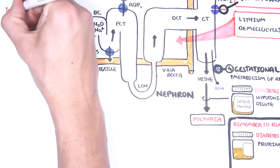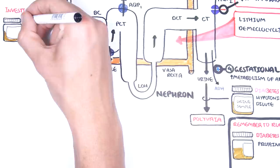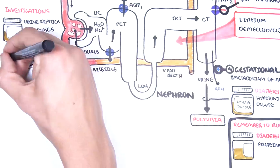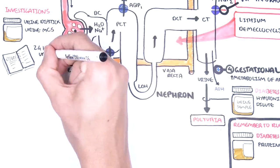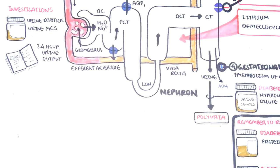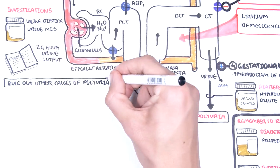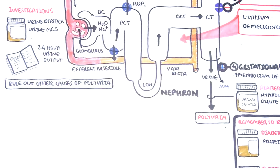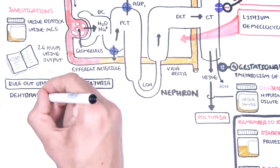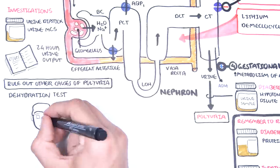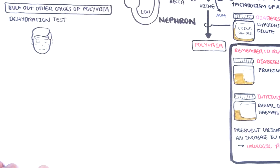Investigations to perform: because patients present with polyuria, it's good to perform a urine dipstick, urine microscopy culture and sensitivity, and a 24-hour urine output measurement — a diary can be used for this. It's important to rule out other causes of polyuria such as diabetes mellitus and intrinsic renal disease. The most important test to remember in diabetes insipidus is the dehydration test, which helps with diagnosis and differentiation of different types of diabetes insipidus.